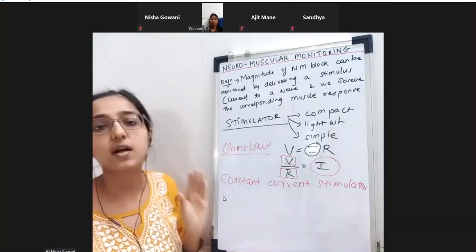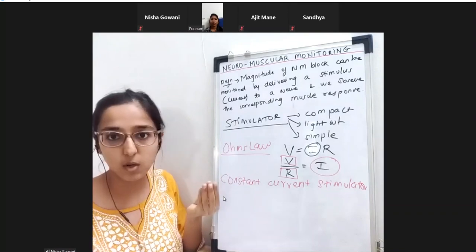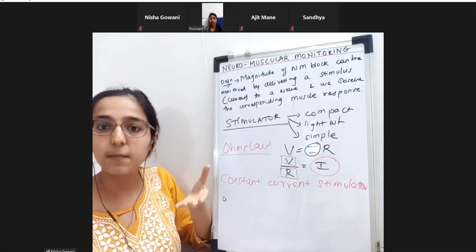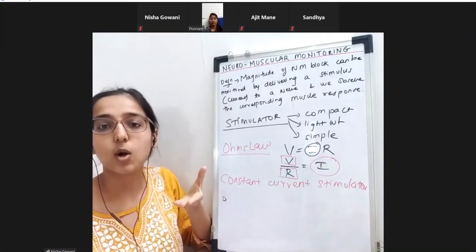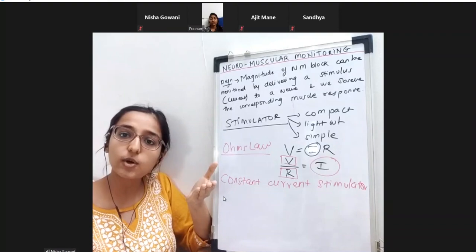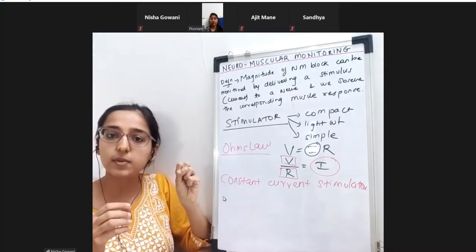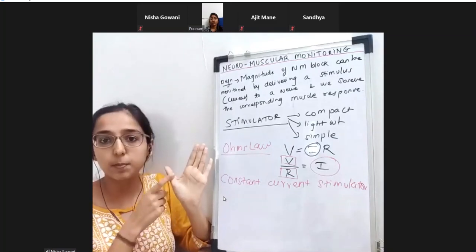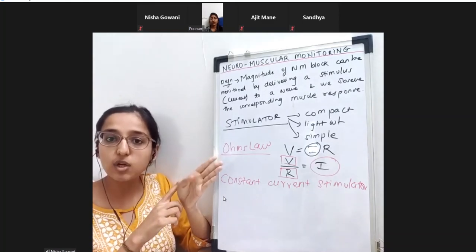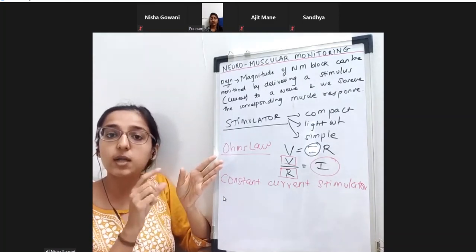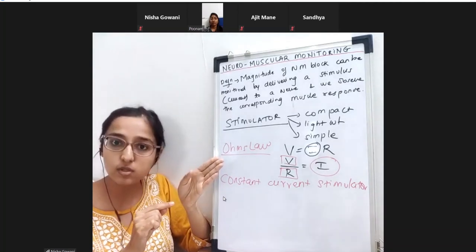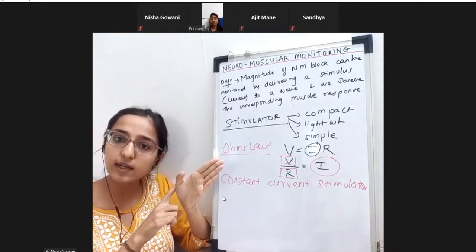After giving a current, I am expecting a muscle contraction will occur. The force of the muscle contraction is going to be directly proportional to the number of muscle fibers that have been stimulated. For adductor pollicis, if all muscle fibers get stimulated, it will contract with more force; if fewer fibers are stimulated, it will contract with lesser force.